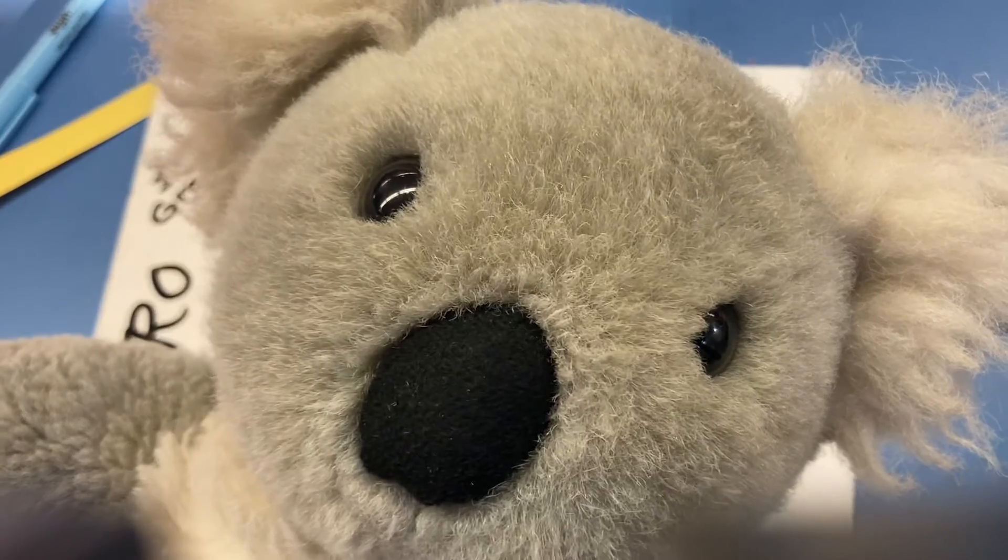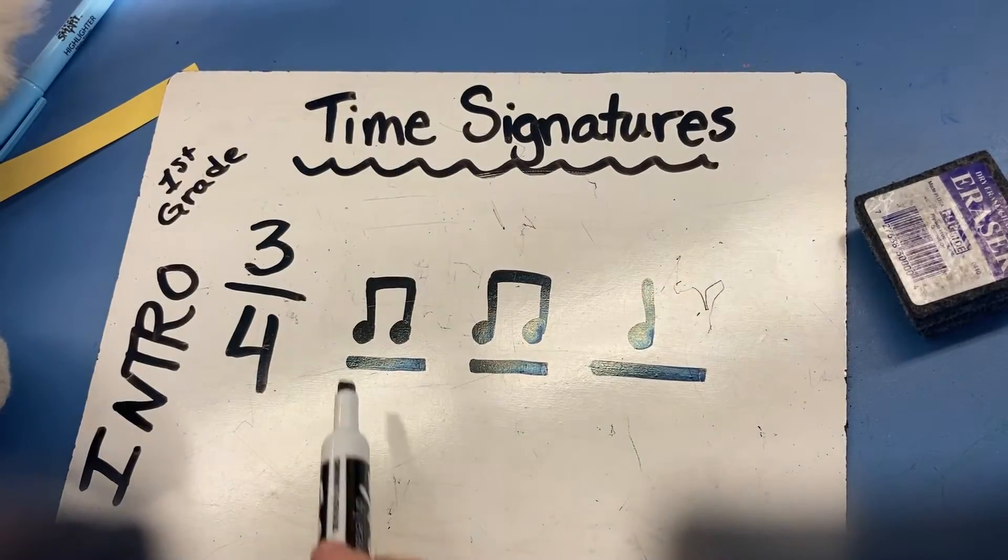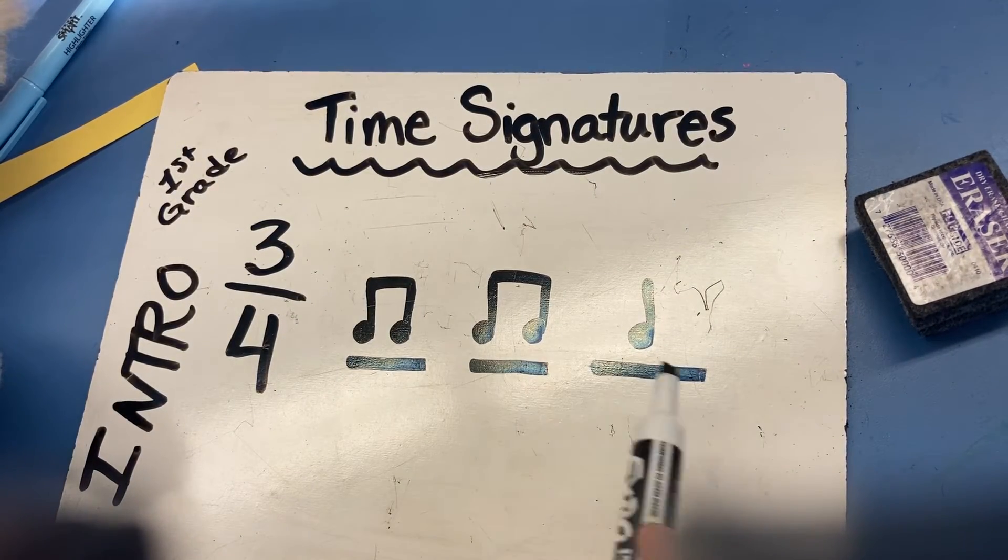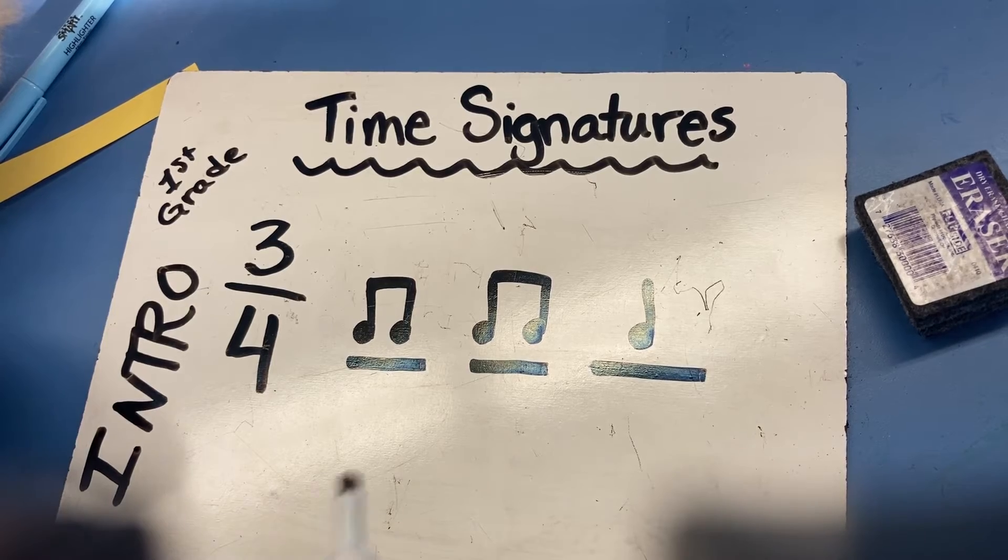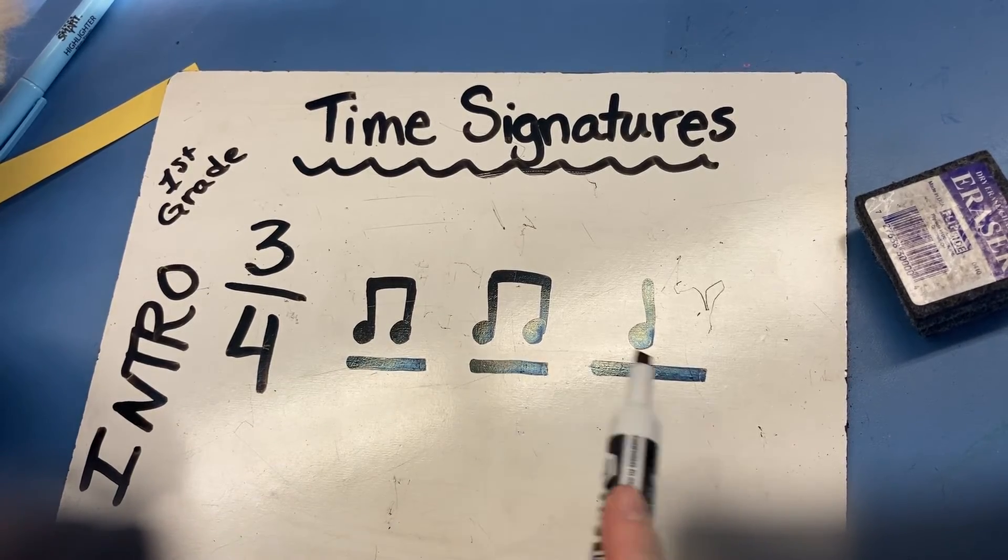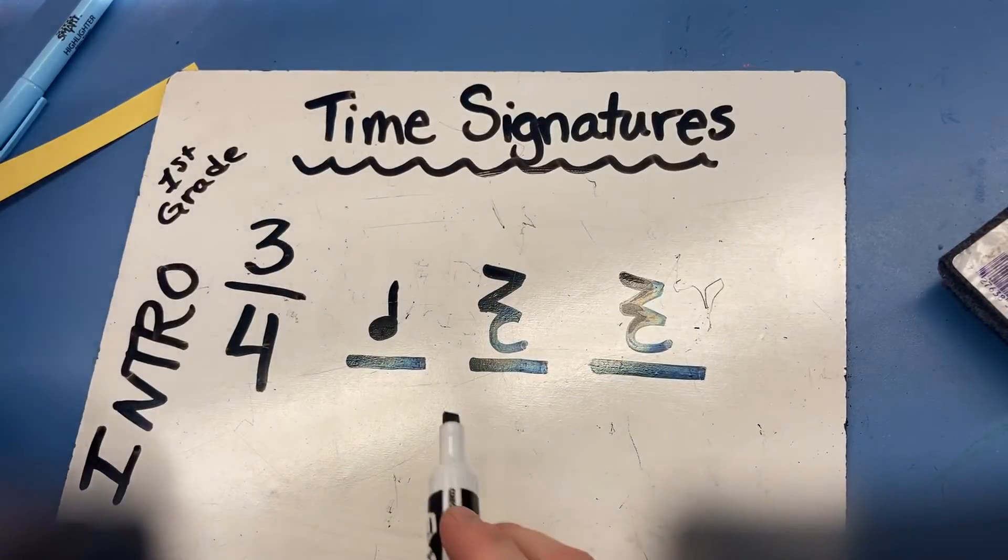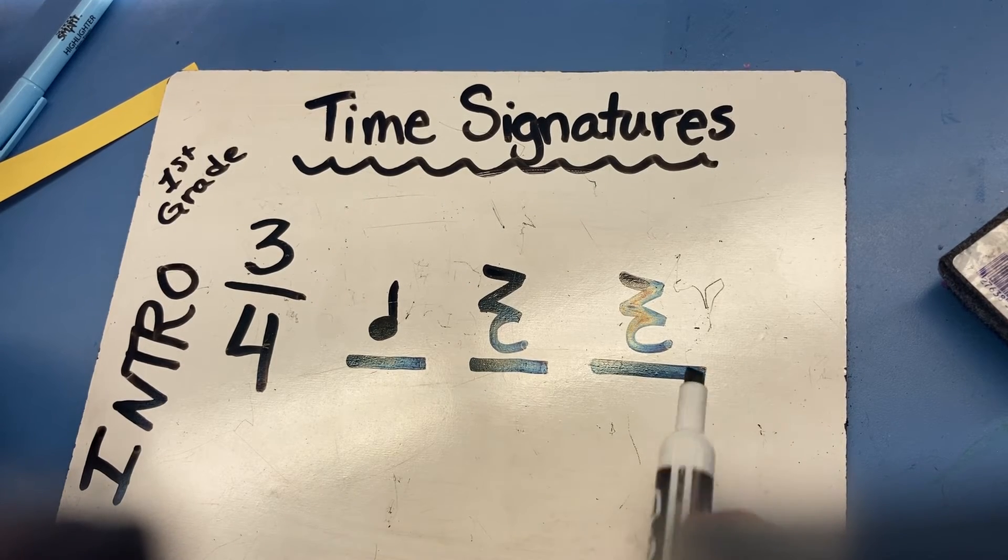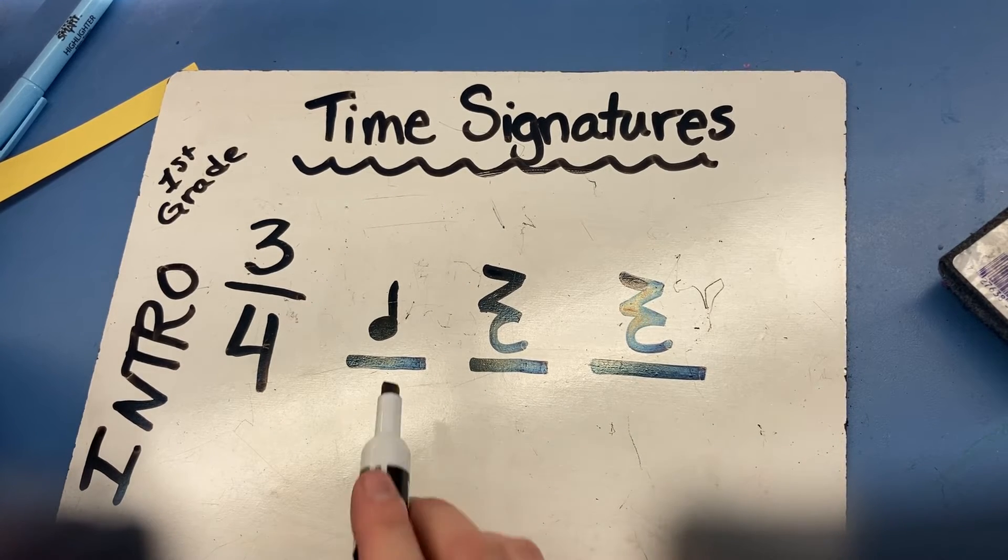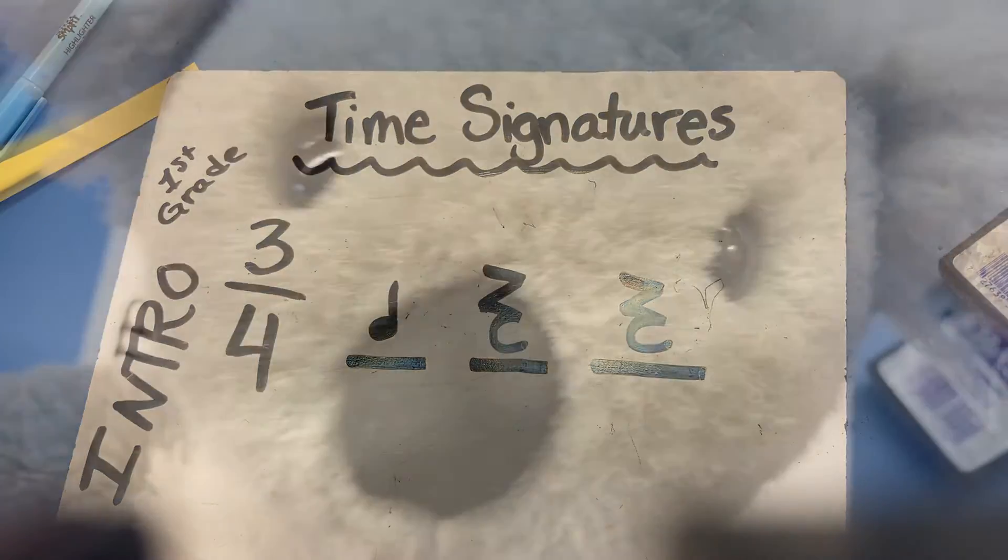Here we go, ta, ta, ta. Next one with 3-4 time signature. One, ready, go. Ti, ti, ti, ti, ta. One, ready, go. Ta, shh, shh. Okay kids, here's my question section.